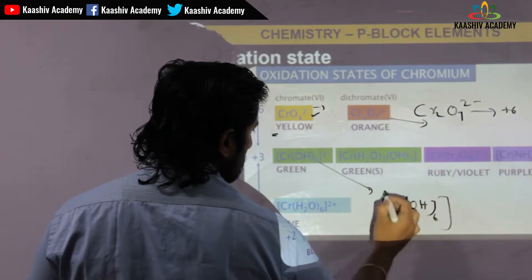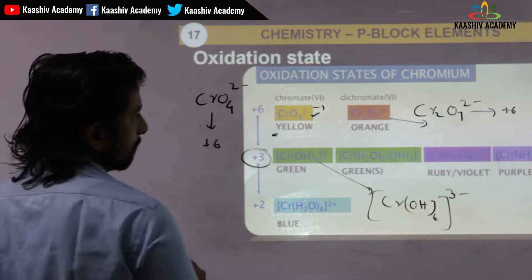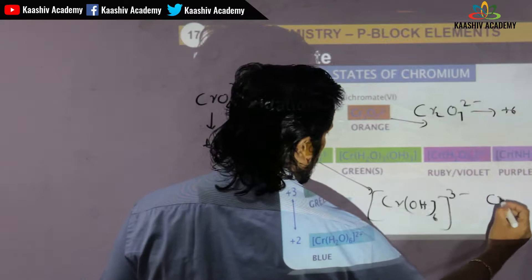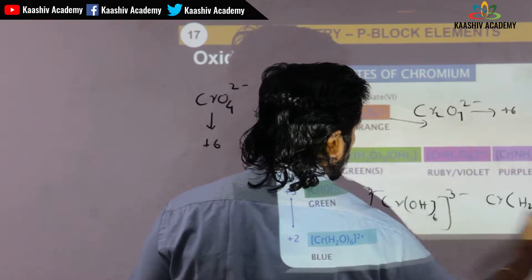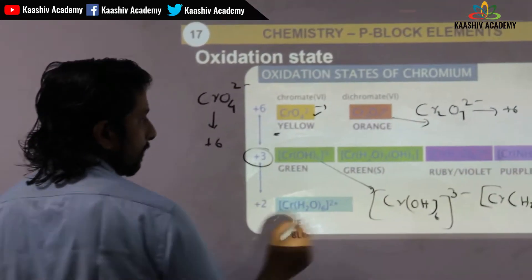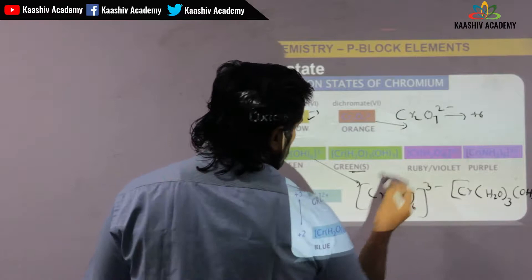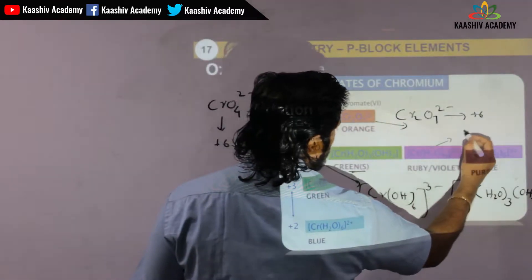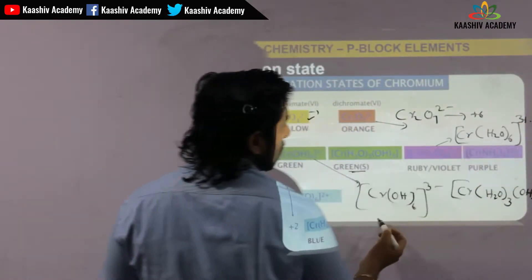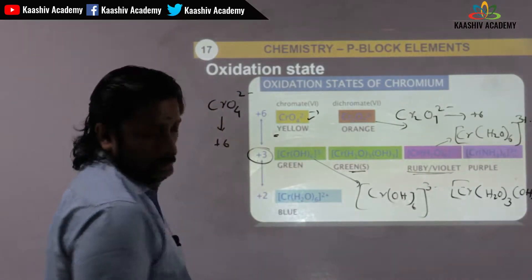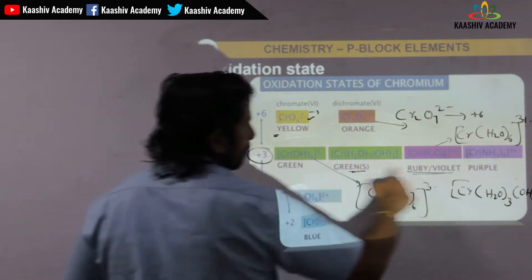The next compound has oxidation state plus 3. Another compound also has oxidation state plus 3 and is green in color.